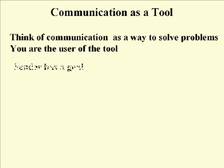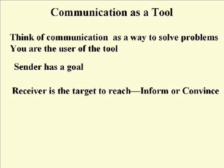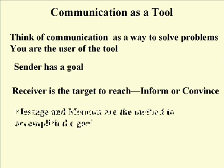In our other model, the sender is you and you have a goal. The receiver becomes a target at which you are trying to aim, and this is who you want to reach with that message in order to accomplish your goal — usually to inform or convince them of something, though it can be something else. The way in which you will accomplish this is through using your message and your medium. Those are the main ways to accomplish a goal, and we will call that a package.